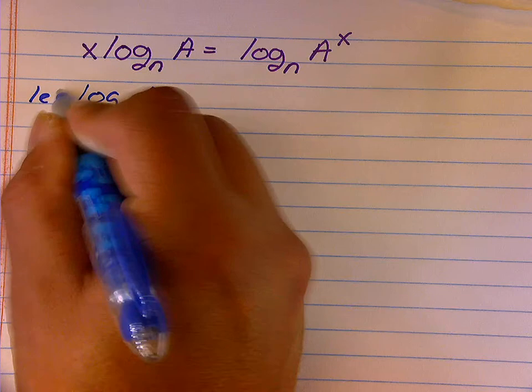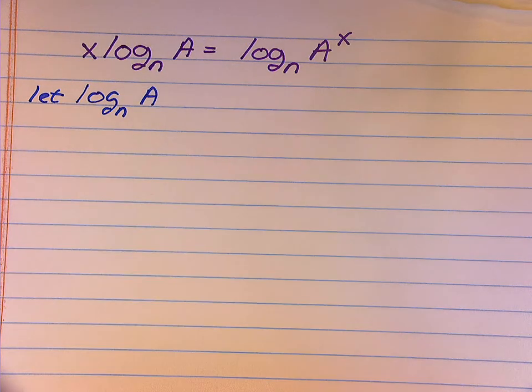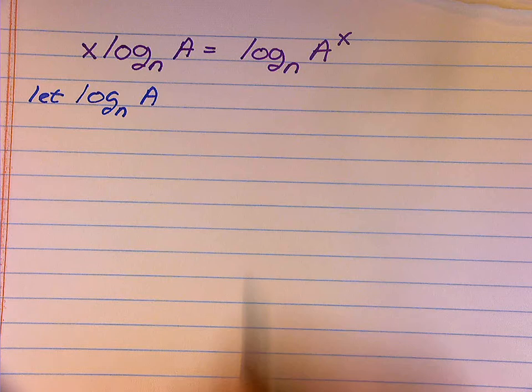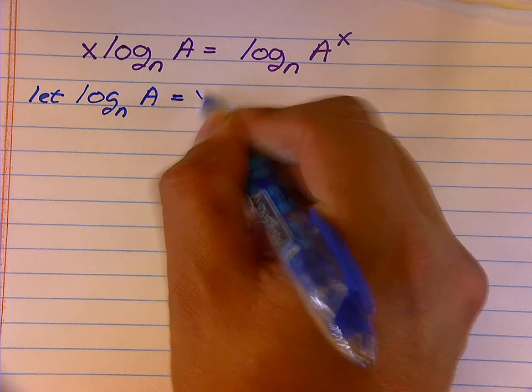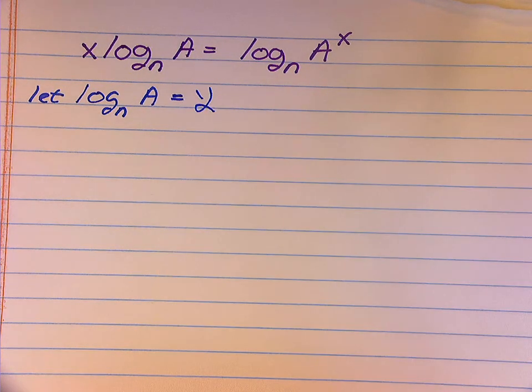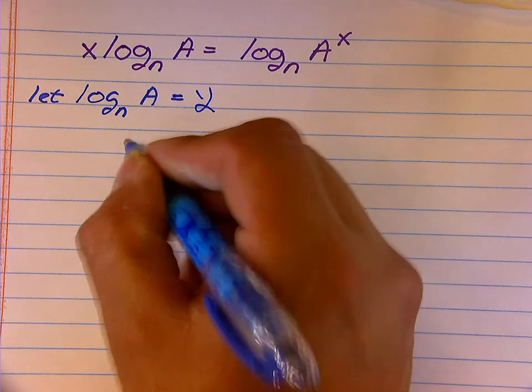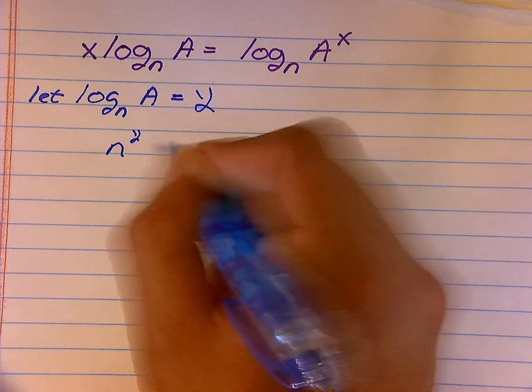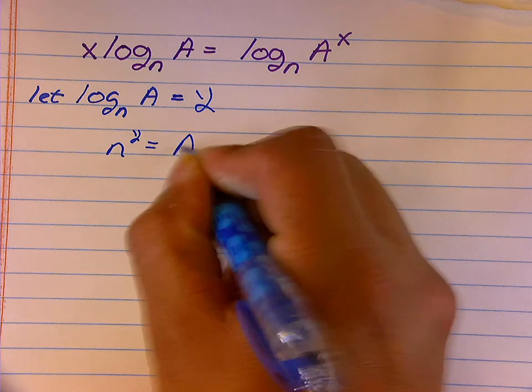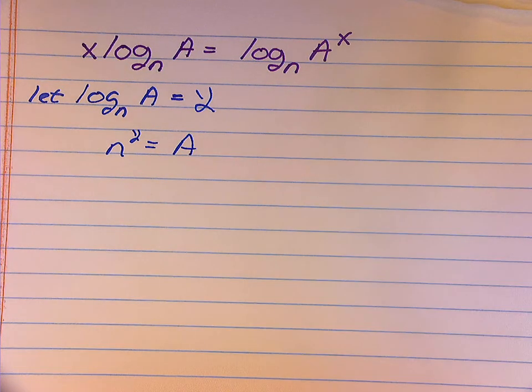What I'm going to do is say that this has a value. I'm going to let that value be y. Then, by definition of that logarithm, y is the exponent I put on an n to get the value A.